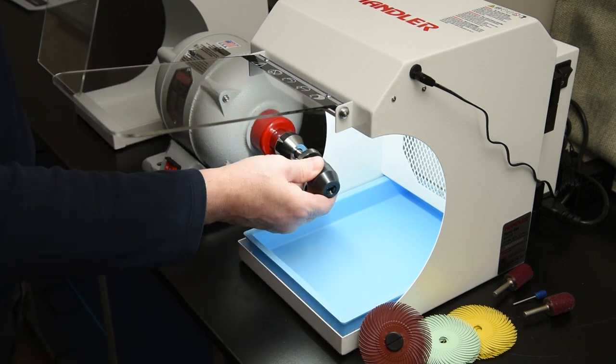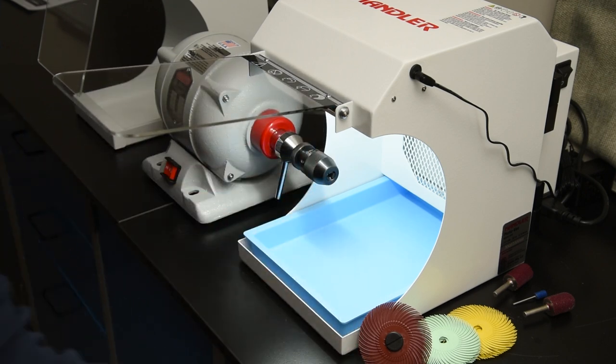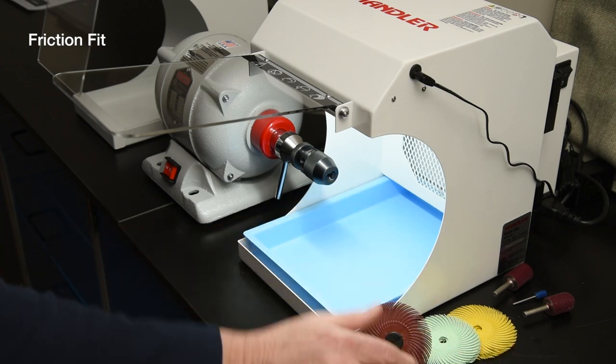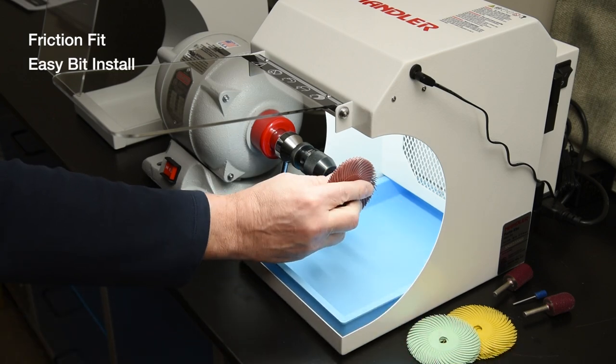Attaching the number 18 keyless chuck to the right side utilizes the same friction fit method. Installing a bit is the same as a keyless chuck on a standard drill.